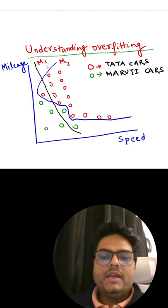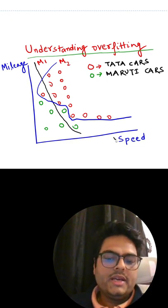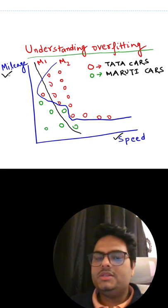Hey guys, in this simple example I have the speed of the car on the x-axis and mileage of the car on the y-axis.